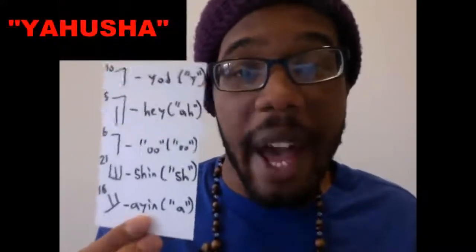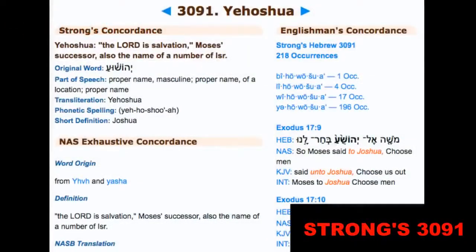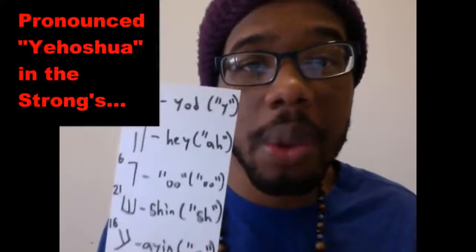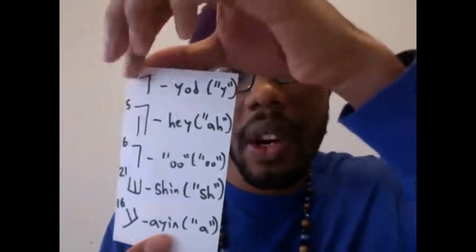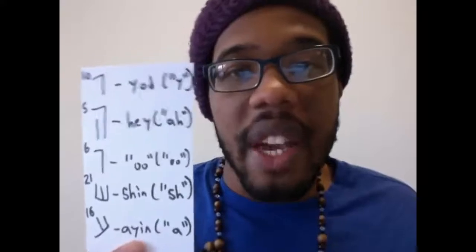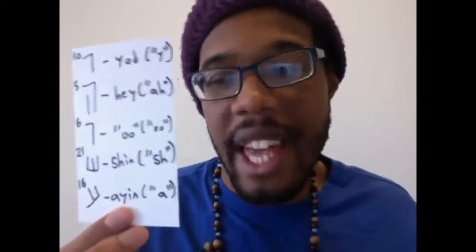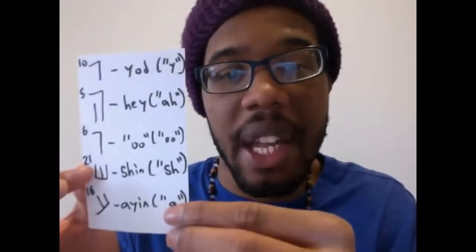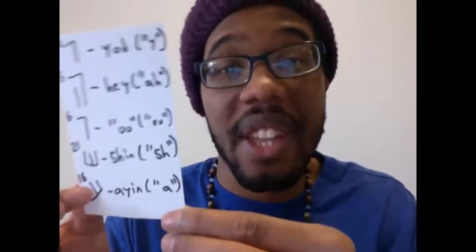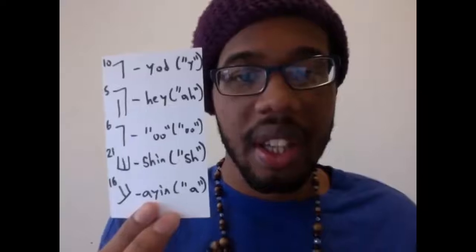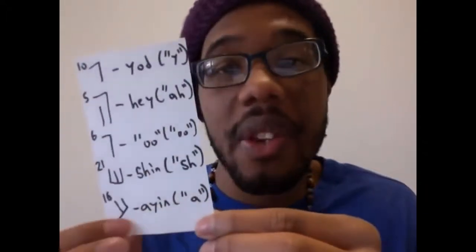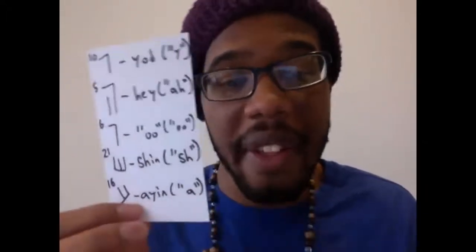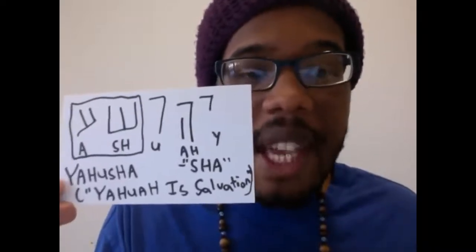Now let's talk more about the name of our Mashiach, Yahusha. You can find more about this in Strong's H3091, which gives the pronunciation as Yahushua. The name has five characters: the Yod, Hey, and Ooh — which gives you 'Yahu' — and then the Shin and the Ayin. The Shin is the 21st letter and the Ayin is the 16th letter of the Hebrew alphabet. The Shin is pronounced 'sh' and the Ayin is silent but makes an 'uh' sound, so when you put it all together you get Yahusha.